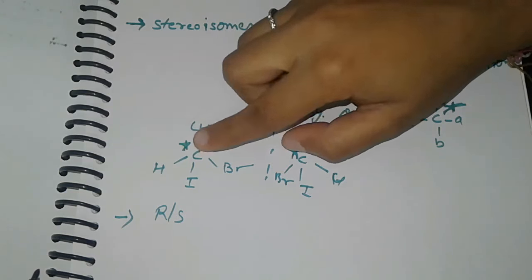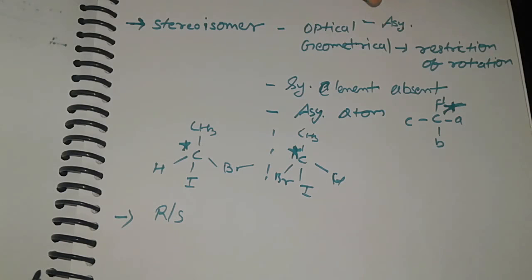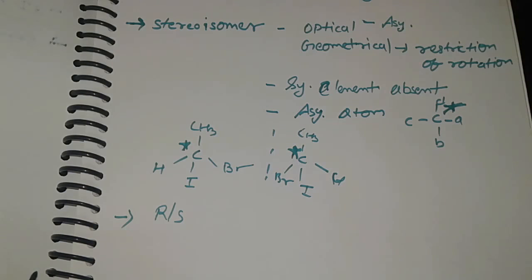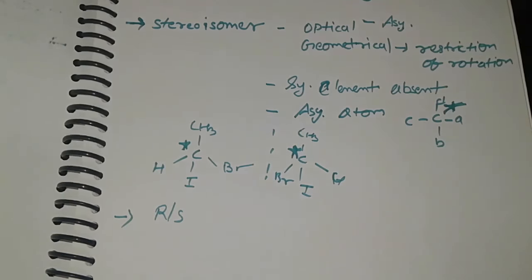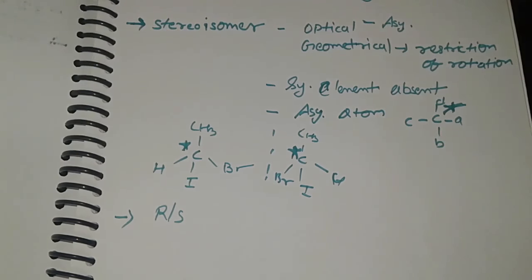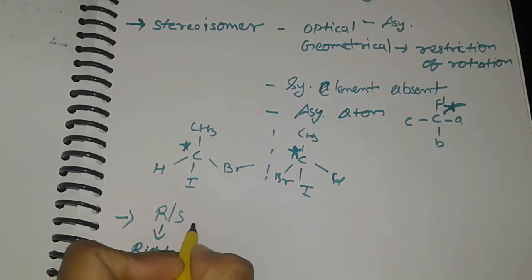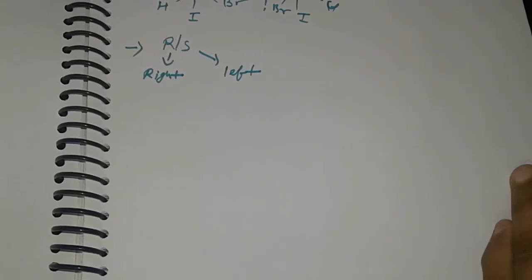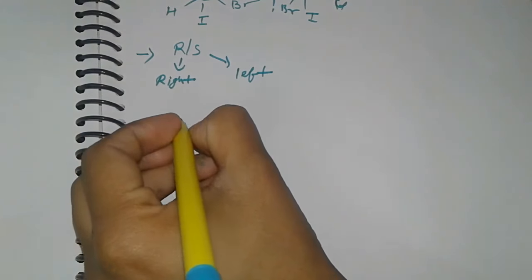So I'll start with RS nomenclature. This is only for the chiral carbon or due to chirality. The chirality can be due to asymmetric atom, chiral axis, or chiral plane. First of all, in RS nomenclature, R means rotation in right direction, and S means rotation in left direction.